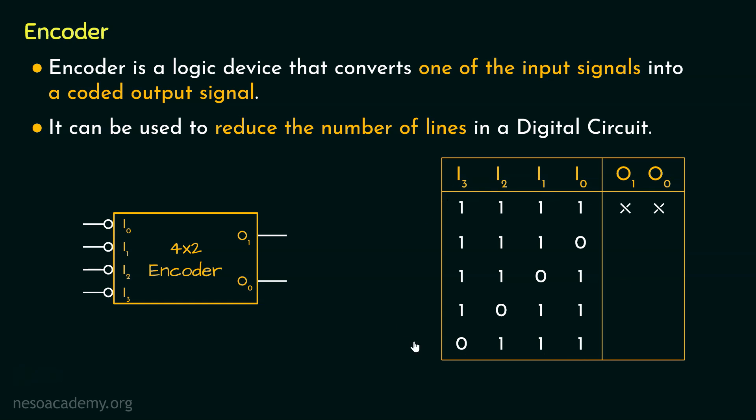So we have got 4 different patterns and along with that, we have got 2 different output lines. So the sequence 0, 0 will indicate I0 is high, 0, 1 will indicate I1 is high, 1, 0 is going to indicate that the input line I2 is high and 1, 1 will indicate that the input line I3 is active. Now these are going to be the output sequences if we have active high outputs.